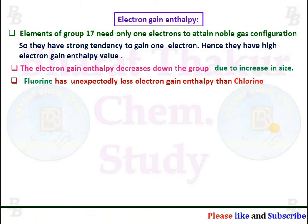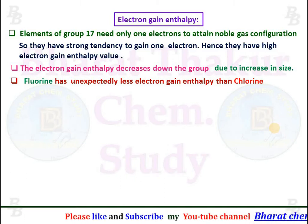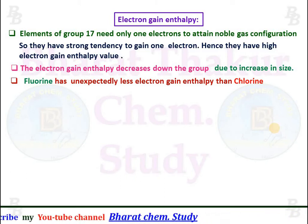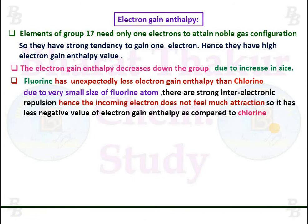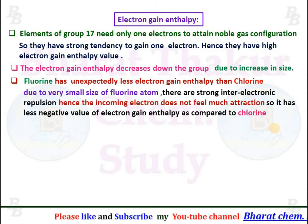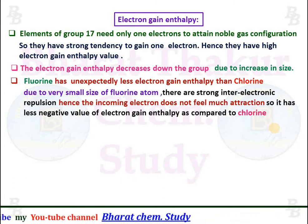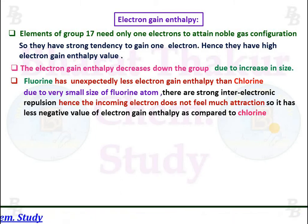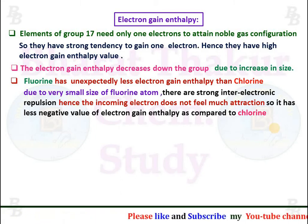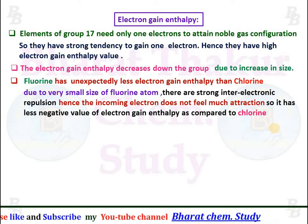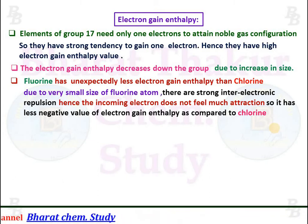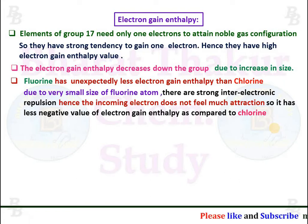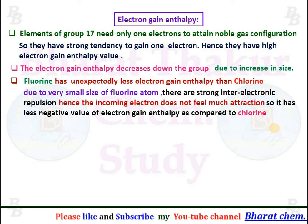However, there is an exception: Fluorine has unexpectedly less electron gain enthalpy than Chlorine. This is due to the very small size of the Fluorine atom, where there are strong inter-electronic repulsions between electrons. Hence the incoming electron does not feel much attraction from the nucleus, so it has a less negative value of electron gain enthalpy than Chlorine.